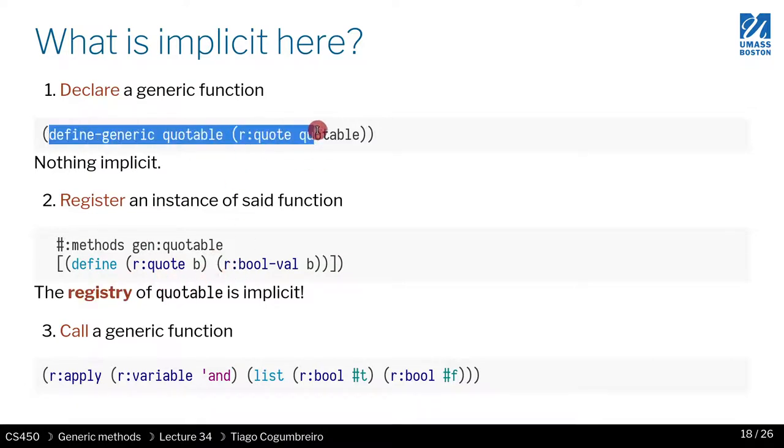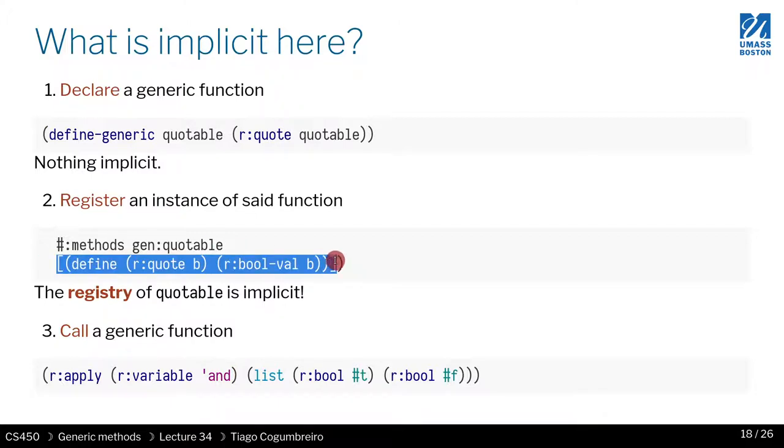So this registry is what is being implicit. Additionally, there is some kind of runtime information you need. You need to know for each structure, what is the implementation? What is the function that you've implemented for each